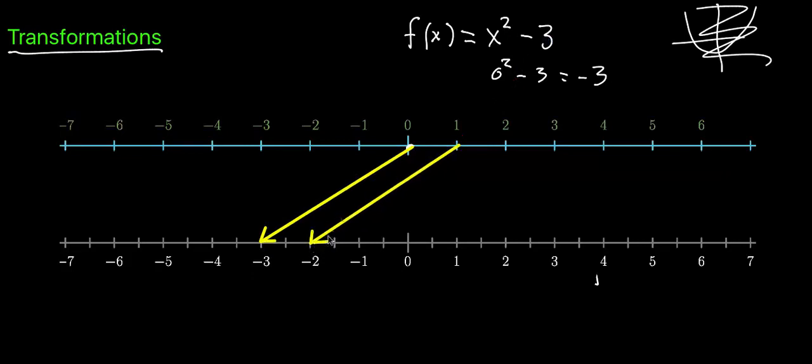Just to list another example, let's say you plug in three itself. Three squared minus three is nine minus three, which is six. So in this transformation we want to watch three move to the number six.